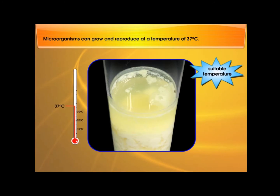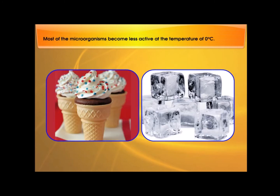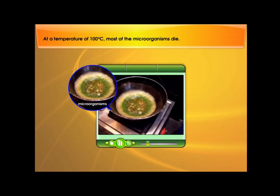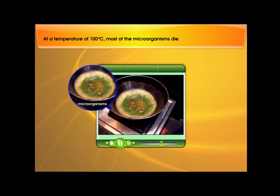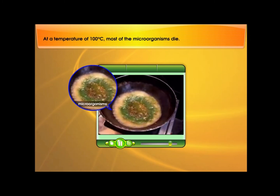Microorganisms can grow and reproduce at a temperature of 37 degrees Celsius. Most of the microorganisms become less active at a temperature of 0 degrees Celsius. At a temperature of 100 degrees Celsius, most of the microorganisms die.